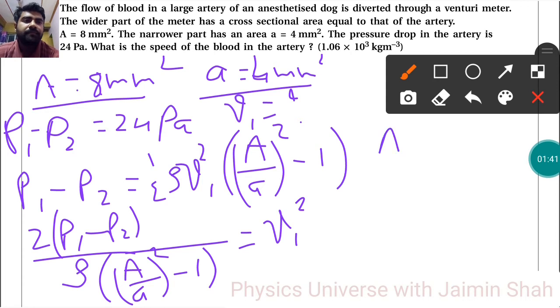Here capital A is 8 times 10 to the minus 6 meter squared, and small a is 4 times 10 to the minus 6 meter squared.